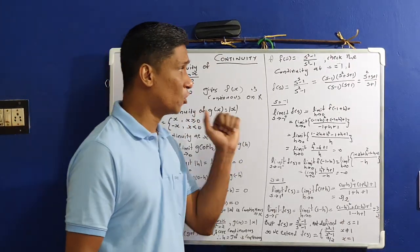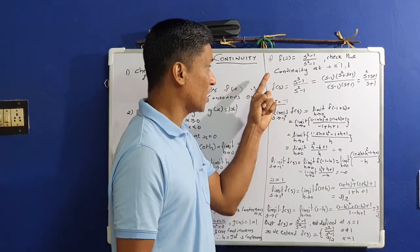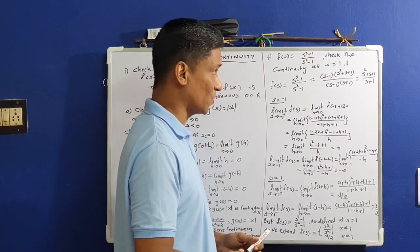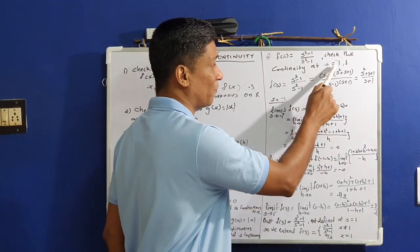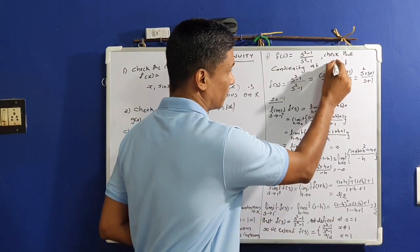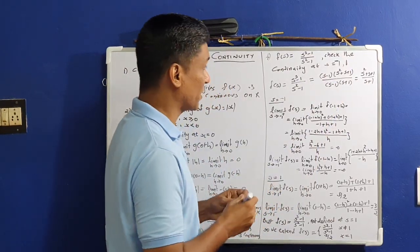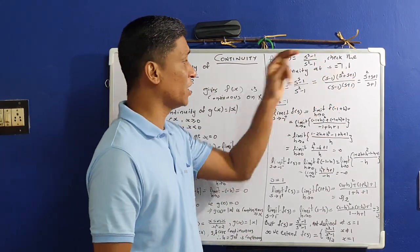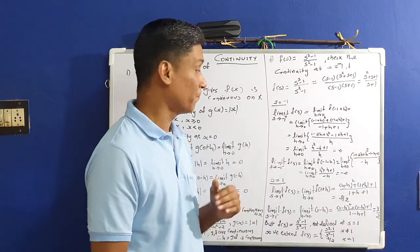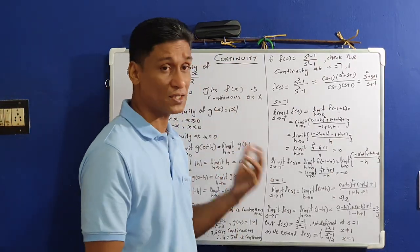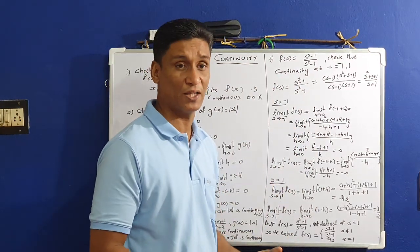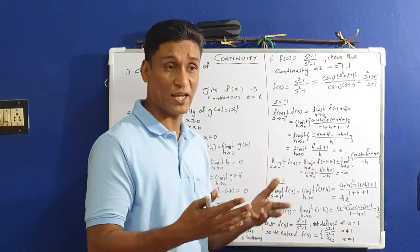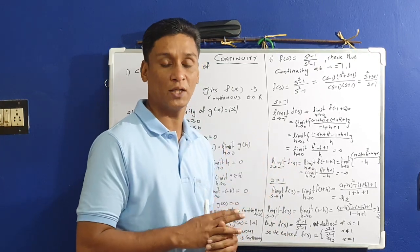Now come to the fourth problem. f(s) = (s³−1)/(s²−1). Check the continuity of this function at s = −1 and s = +1. We check whether the left limit exists, the right limit exists, and whether they are equal to the functional value at that particular point.